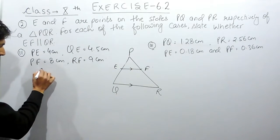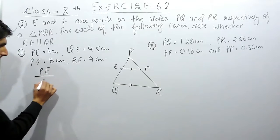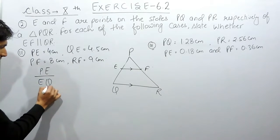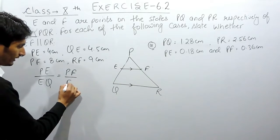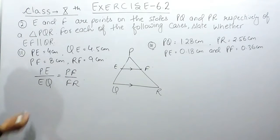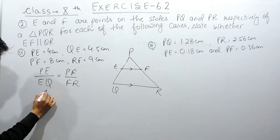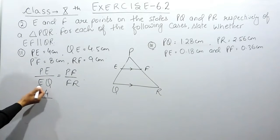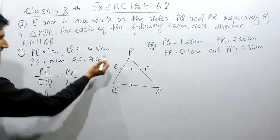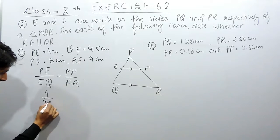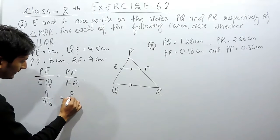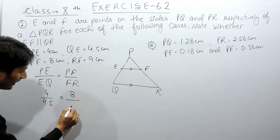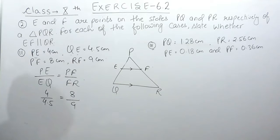So here I have to prove that the ratio PE upon EQ is equal to PF upon FR. The value of PE is given as 4 cm, the value of EQ is given as 4.5 cm, PF is 8, and RF is 9. So I have to prove that these two ratios are equal.